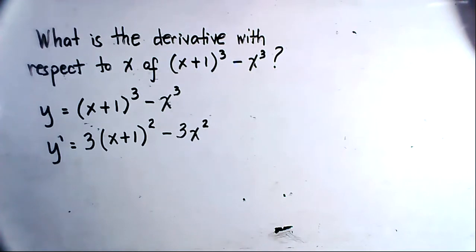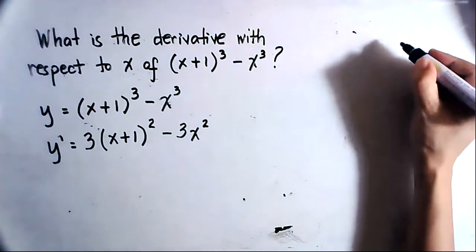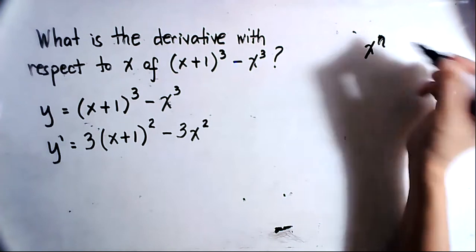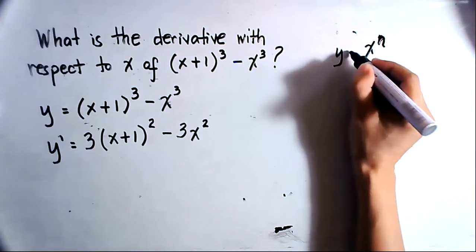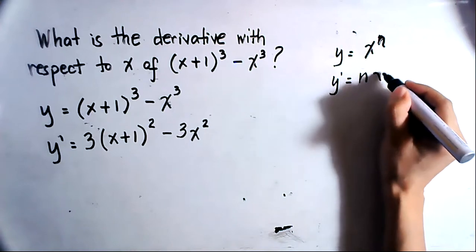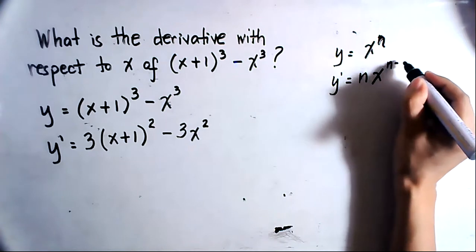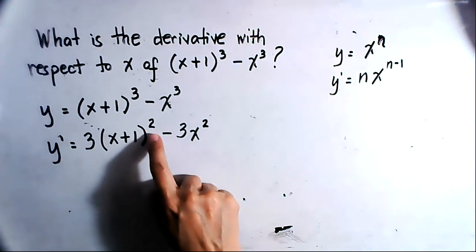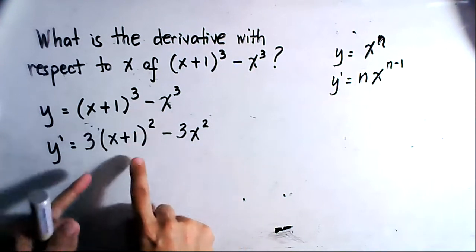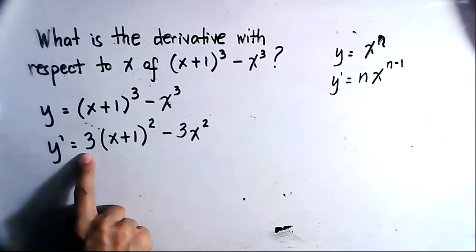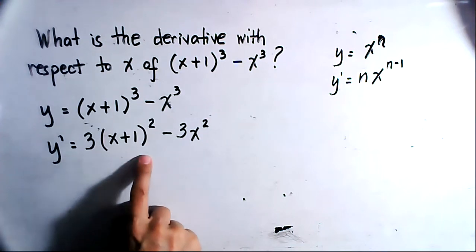Take note that if you are going to determine the derivative of x to the n, the derivative of x^n will be y prime equals n times x^(n-1). So that's basically what we did with (x+1) raised to the third power, wherein 2 will be the exponent of the quantity x+1, and we bring down the exponent 3 as the numerical coefficient for (x+1).